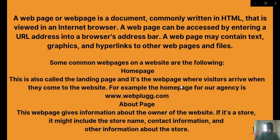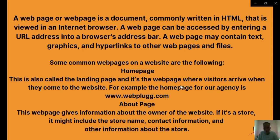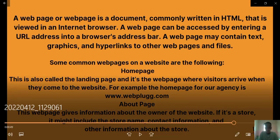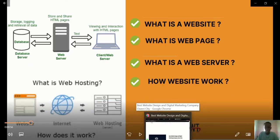The about us page gives information about the owner of the website. If it's a store, it might include the store name, contact form, and other store information. From our website weblog.com we have a home page, about us page, contact us page, blog, and services. On an e-commerce site, the about us page will tell you what the store offers and what you can buy or order.